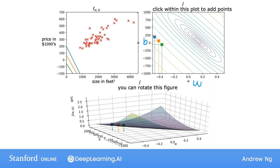The two axes on this contour plot are B on the vertical axis and W on the horizontal axis. What each of these ovals, also called ellipses,